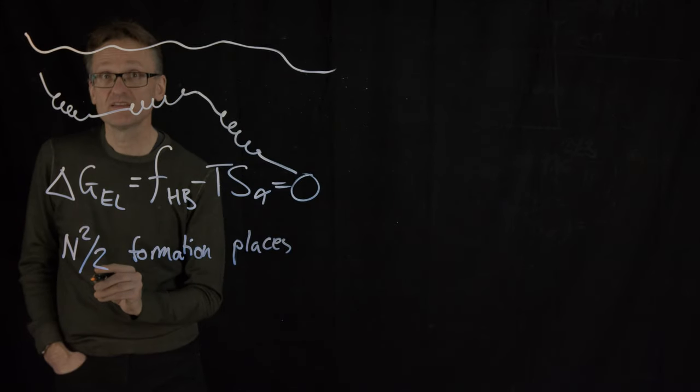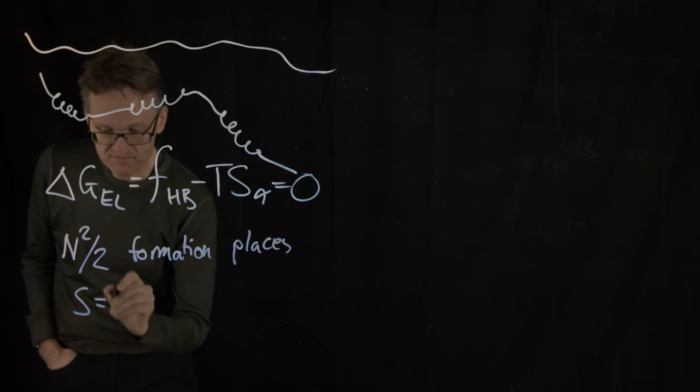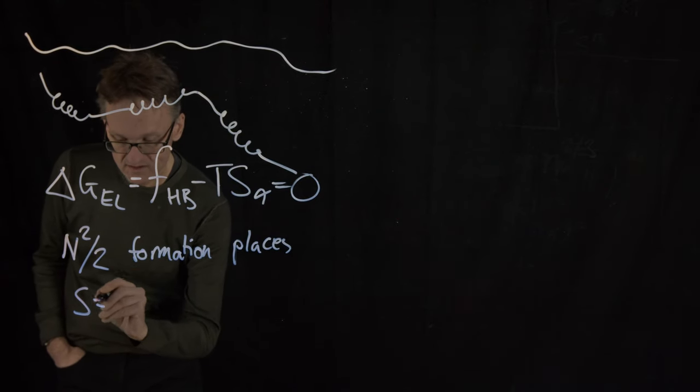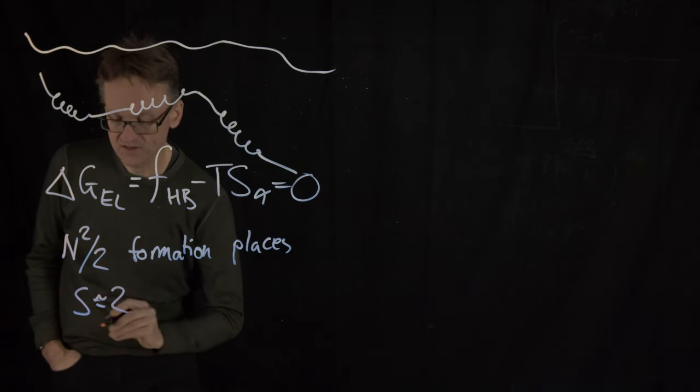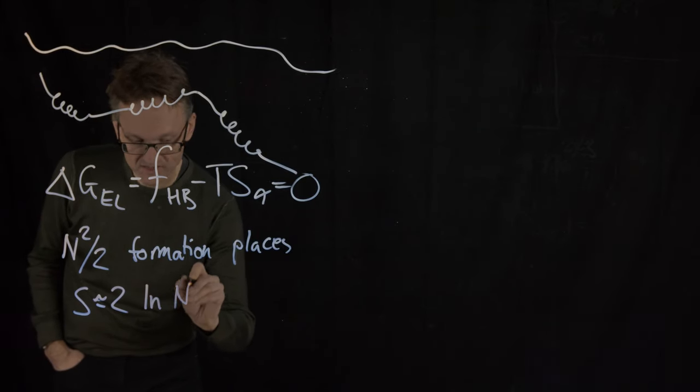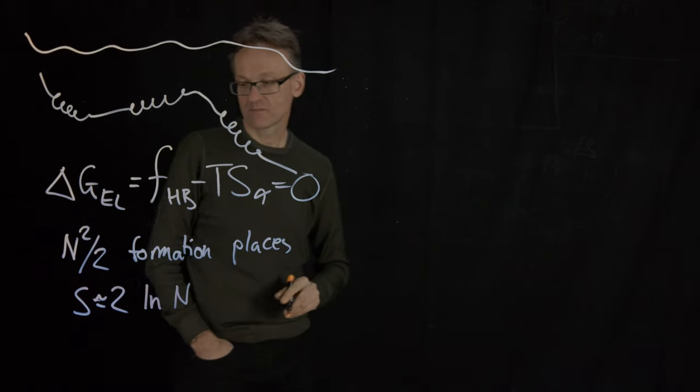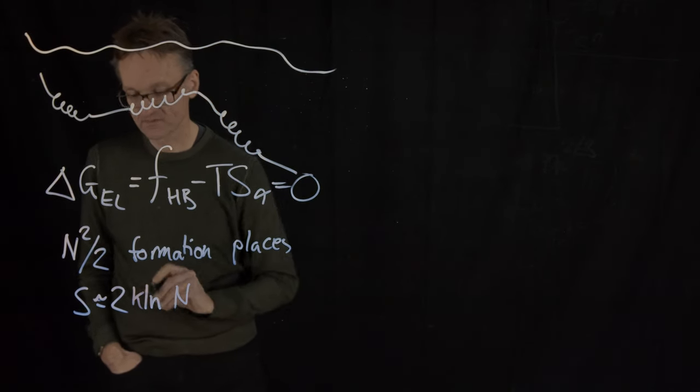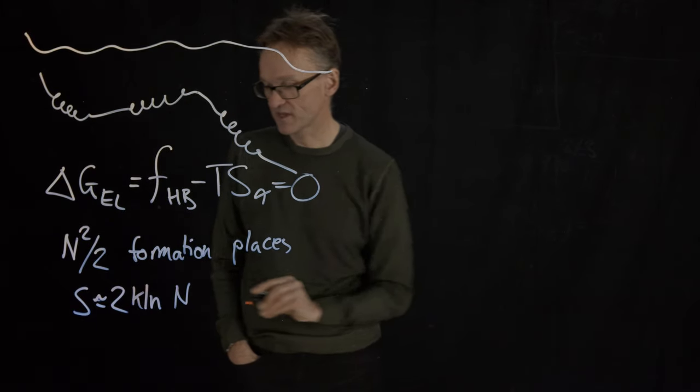So the number of states would be N squared divided by two formation places. That would mean that the entropy for the helix, if I skip that factor two to make my life easier, would then be roughly 2 for the two in the exponent, 2 ln uppercase N. Sorry, Boltzmann's constant, 2kT ln N.